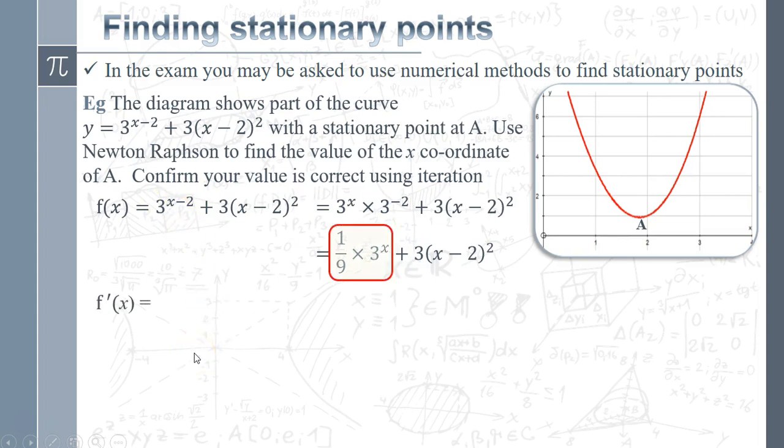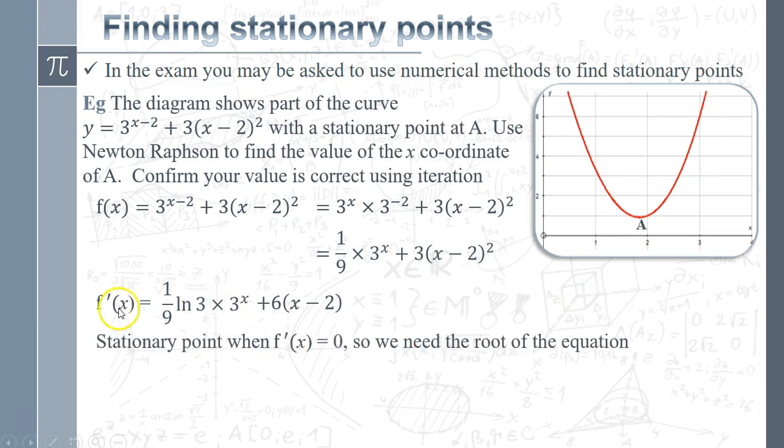Let's do some differentiating. We need to differentiate 3^x, which is ln(3)·3^x. Then we differentiate 3(x-2)^2, so a bit of chain rule by inspection gives us 6(x-2). There's our differentiated function f'(x). What we're doing is we need to find the turning point, so we need to find where that equals zero. We need the root of this particular equation.